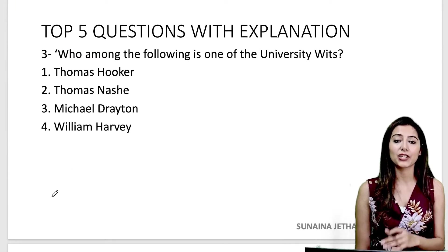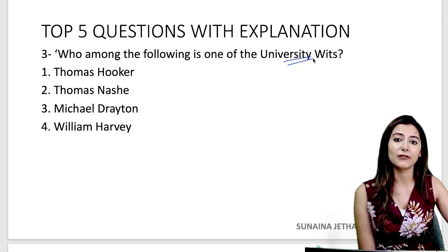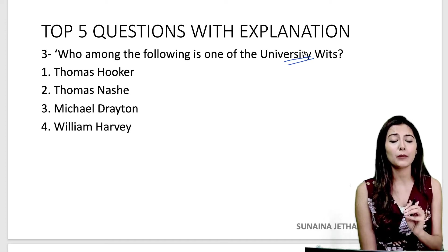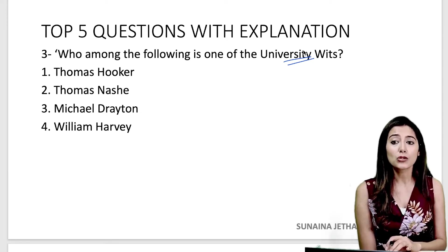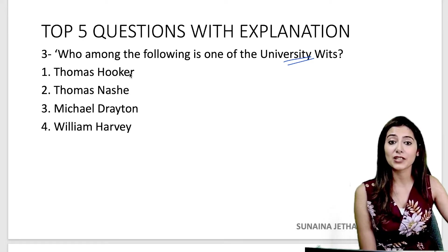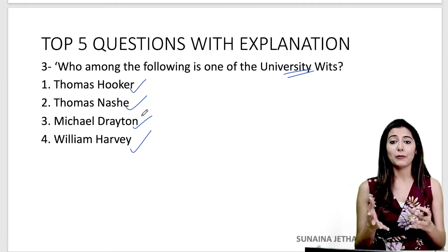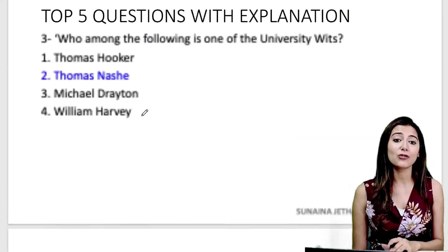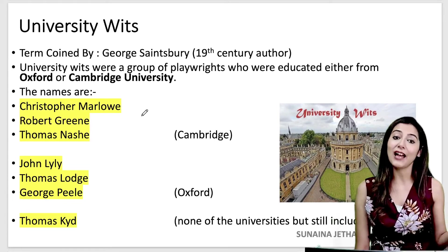Moving forward, we have a question from British literature: 'Who among the following is one of the University Wits?' This is one of the most asked questions — you will definitely see a question on University Wits, either about their members, their types, or who coined the term. The options are Thomas Hooker, Thomas Nash, Michael Drayton, and William Harvey. If you know the members, the answer comes immediately; if not, learn them today because questions on this come repeatedly.